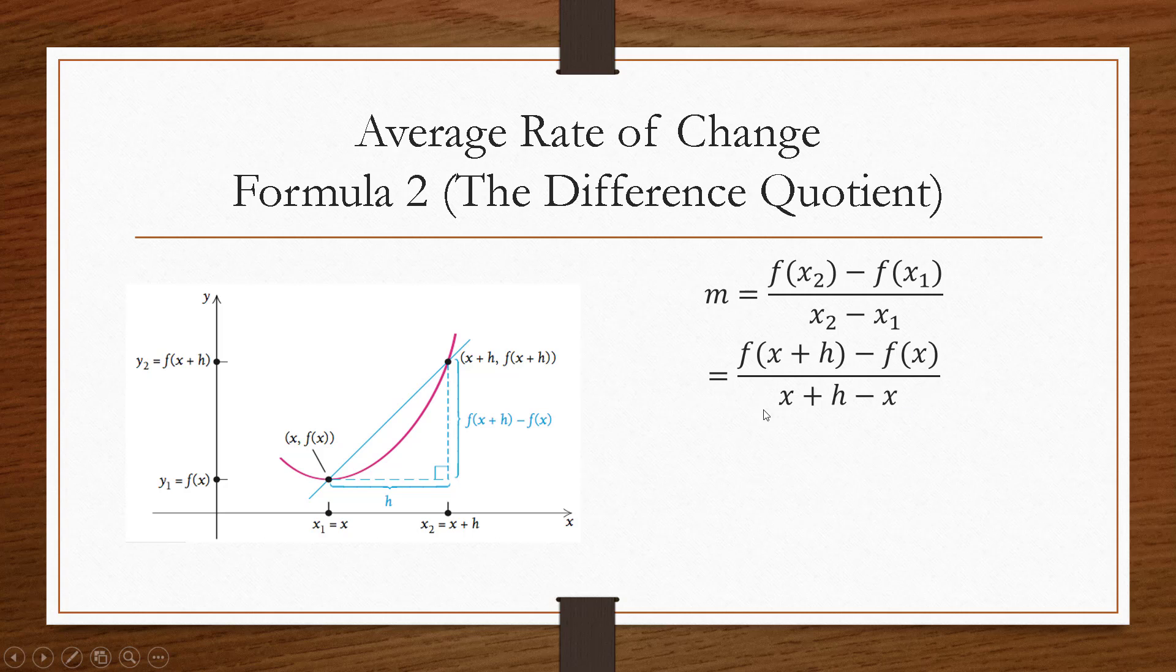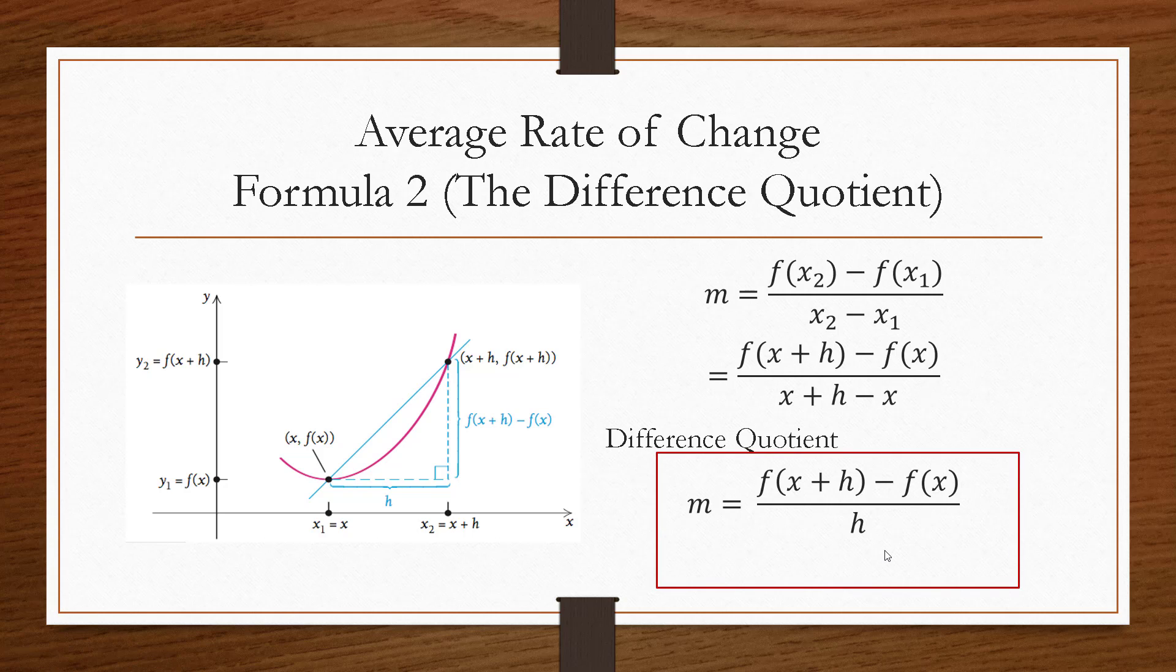But that denominator, you can see these x's cancel out, and we would just wind up with h in the denominator, which makes sense because that is our change in x. So yes, this formula looks completely different and kind of scary, but this really is just a slope. It's the slope of a secant line. It's the average rate of change. When we write it like this, though, we give it a special name, and it's called the difference quotient. So if you're ever asked to find the difference quotient, this is what you're being asked to find.